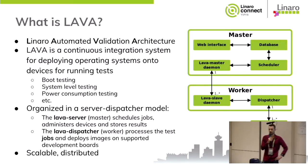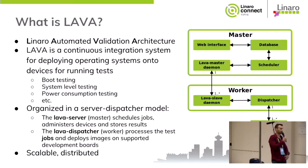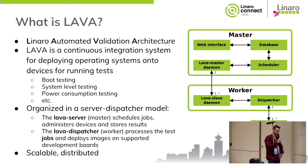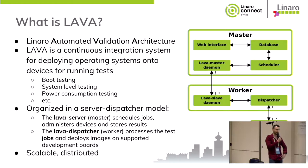LAVA is fully scalable and distributed. It's composed of a LAVA server and a LAVA dispatcher model. The LAVA master handles user interaction, has a database for configuration, and a scheduler to dispatch different tests to different workers. It's composed of one or more workers, and each worker is directly connected to the device under test. You can also have several devices under test per worker.